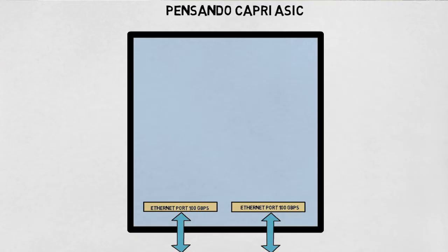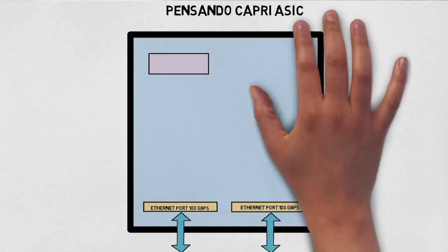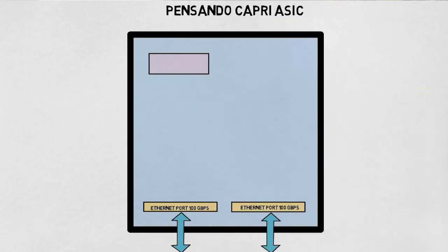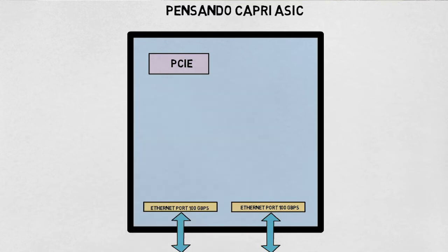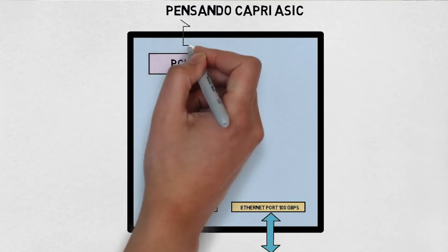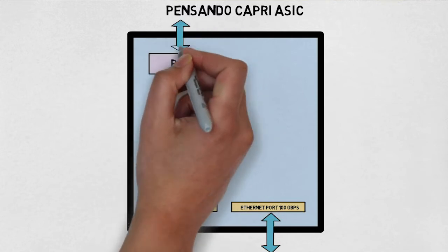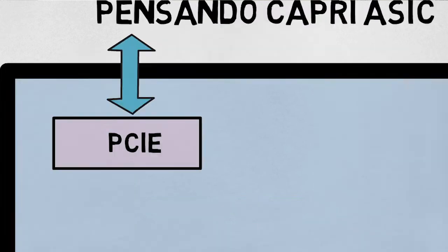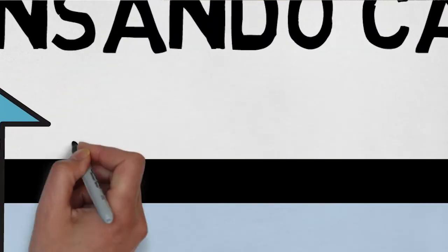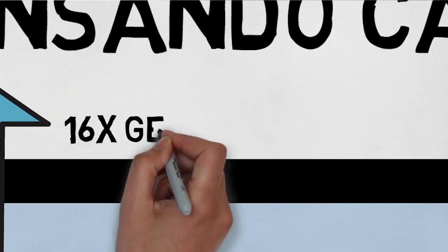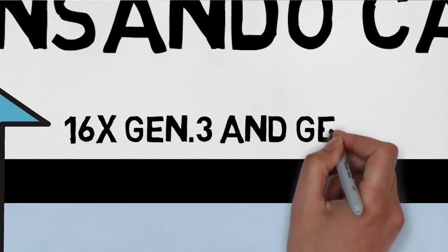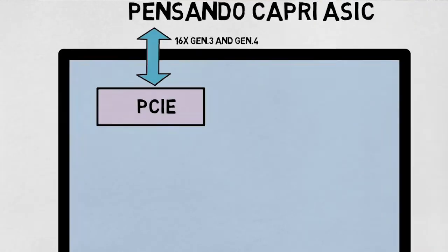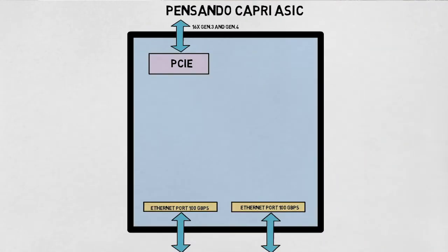The other main interface is the PCI interface into the host operating system. It is a x16 PCI interface Gen3 and Gen4 capable. In addition to these primary interfaces, there are others for management and initialization.